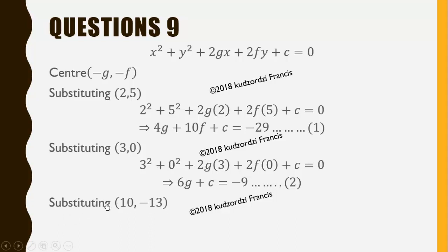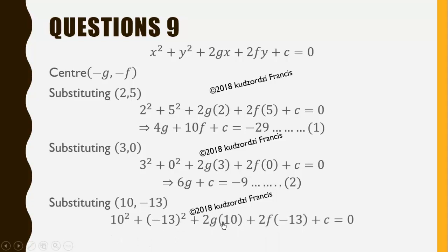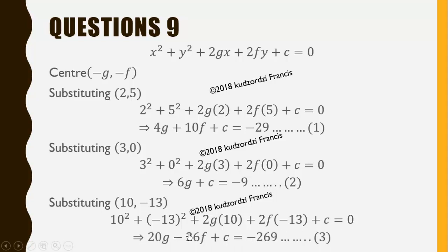Now we repeat the same process for the point (10, -13). Substituting for x and y into the equation gives us 10 squared plus (-13) squared plus 2g times 10 plus 2f times negative 13 plus c equals zero. Simplifying this gives us 20g minus 26f plus c equals negative 269. Let's call this equation 3.